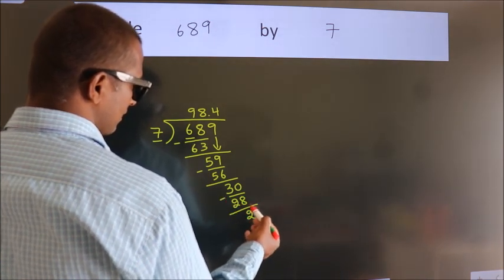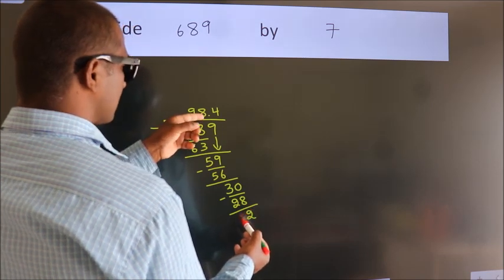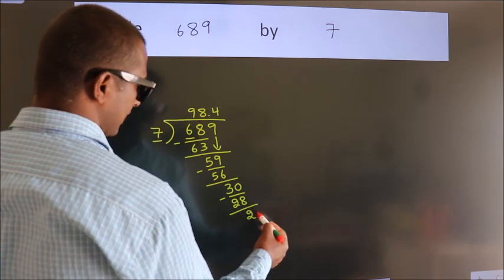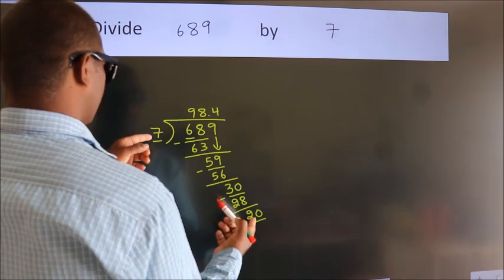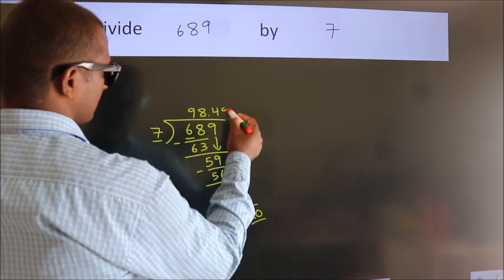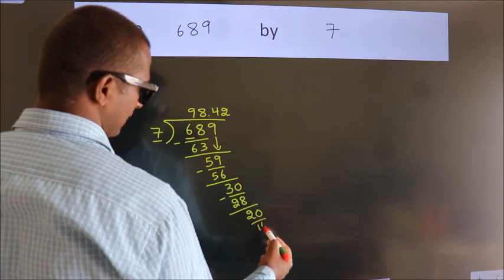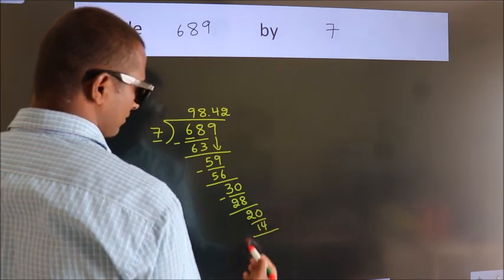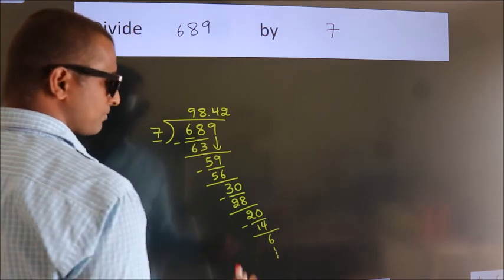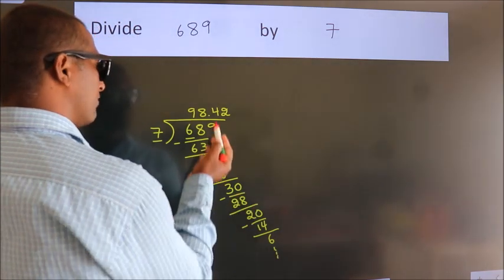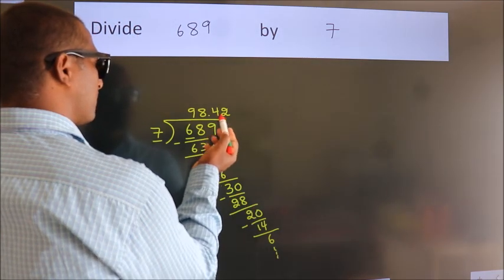After this, we already have the decimal, so we directly take 0, giving us 20. A number close to 20 in the 7 table is 7 times 2, which is 14. Now we subtract and get 6. The division continues, but it is enough if we do up to 2 decimal places.